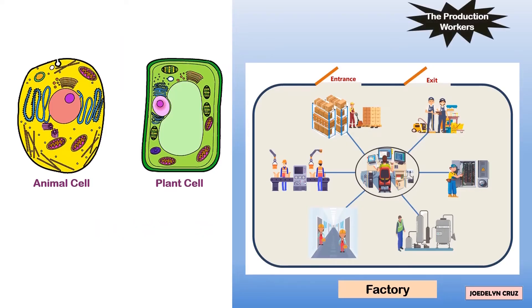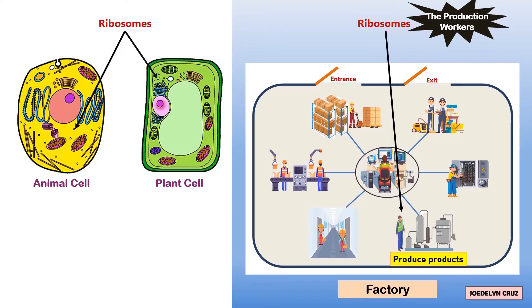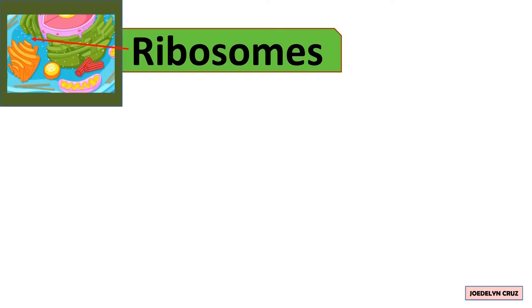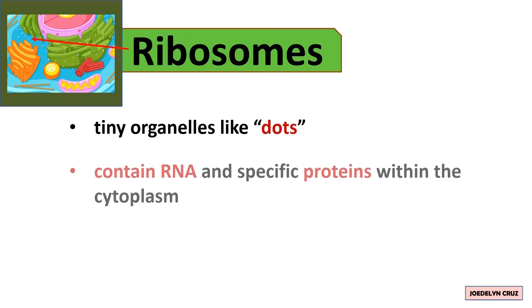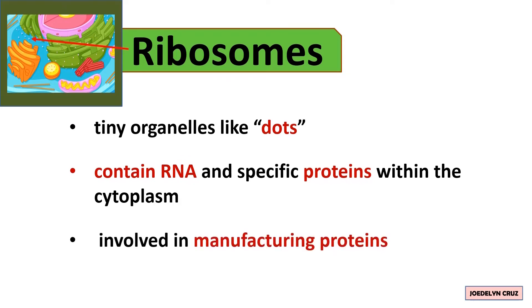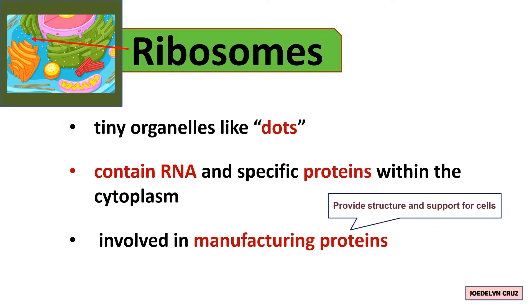The production workers in the factory represent ribosomes — they produce and assemble products in the factory. Ribosomes are tiny organelles like dots that contain RNA and specific proteins within the cytoplasm. They are also involved in manufacturing proteins. Proteins provide structure and support for cells.